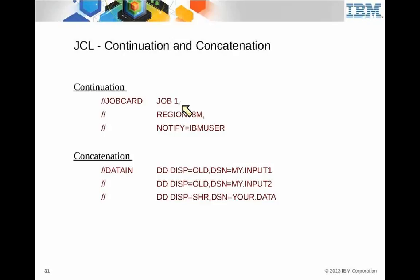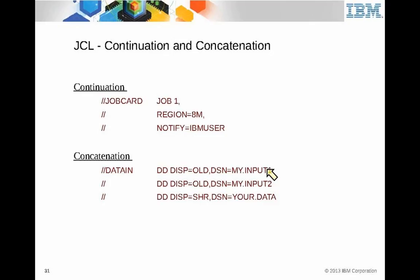Concatenation allows a single DD name to have multiple DD statements. A program reading data can have DD DATAIN with disposition OLD and DSN=MY.INPUT1 — on the last record of MY.INPUT1 it immediately starts reading MY.INPUT2, and at the end of that reads YOUR.DATA, treating it all as one file. Notice: it has DD DATAIN as the DD name, followed by subsequent DD statements with no DD name. That is concatenation — DATAIN is associated with all that data.